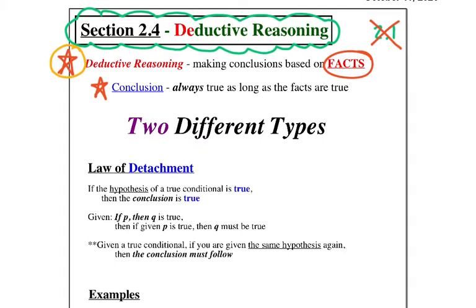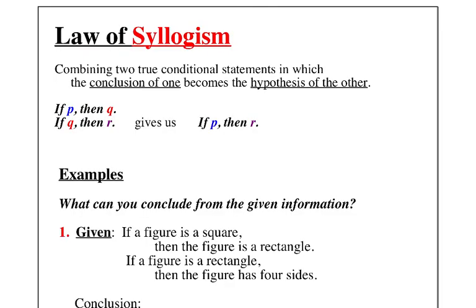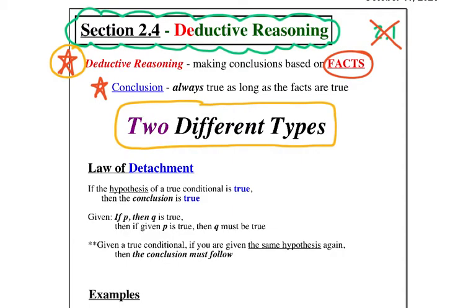So deductive reasoning is what we're doing in 2.4, whereas inductive was 2.1. Now there are two big laws we're going to talk about today: one is called the Law of Detachment and the other is called the Law of Syllogism. Strange-looking word — syllogism — but they're very helpful. Believe it or not, even though you've never heard these before, you use these laws every single day when you make basic decisions.